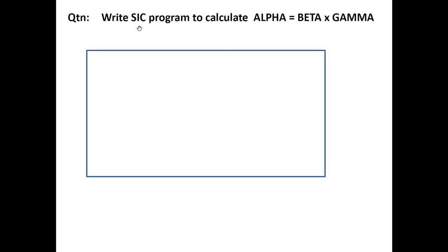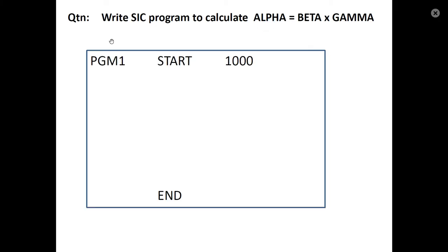The first question is: write a SIC program to calculate alpha equal to beta into gamma. The program is PGM1, start 1000. PGM1 is the program name. Start indicates the beginning of the program and 1000 is the starting address.